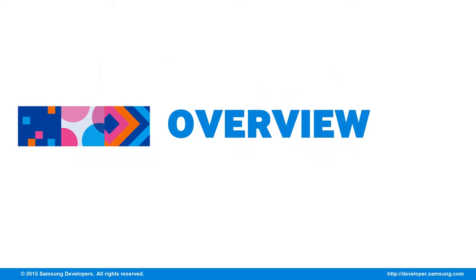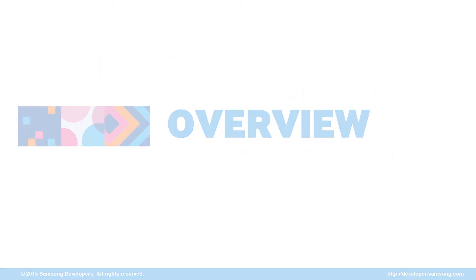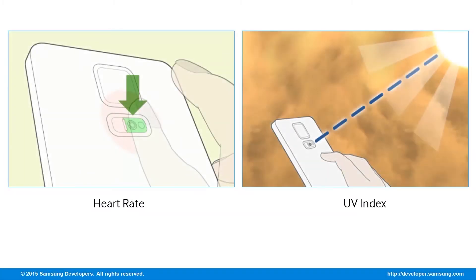Samsung's latest Galaxy flagships all include the dedicated heart rate monitor at the back. While these sensors used to be exclusive to sHealth, the Sensor Extension SDK now lets developers create apps that can measure heart rate and even ultraviolet or UV index.